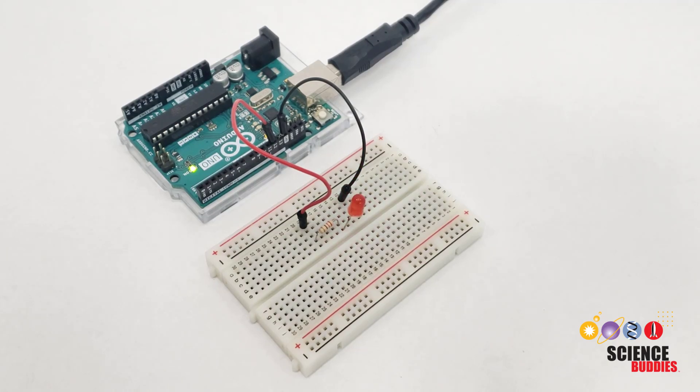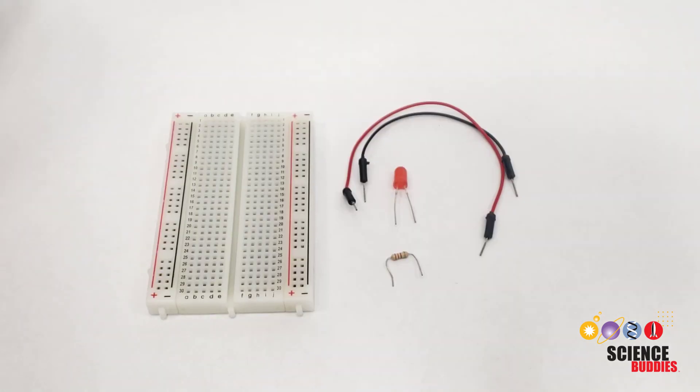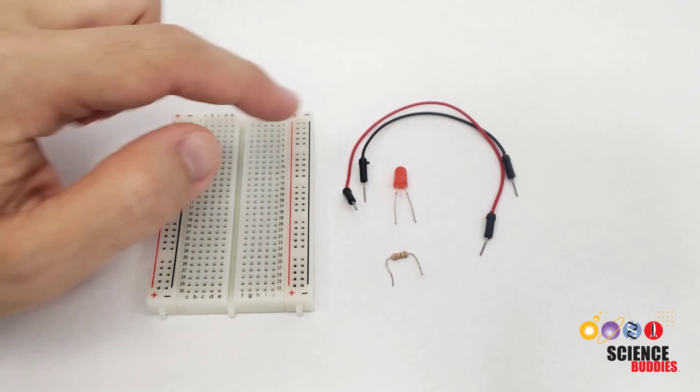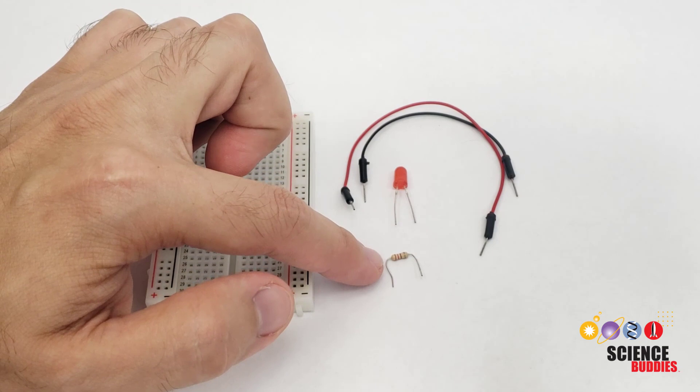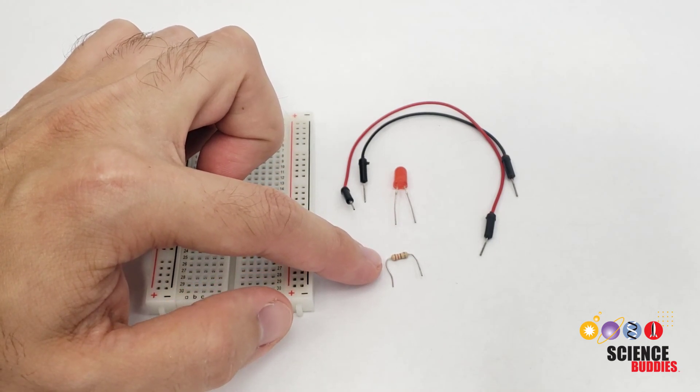In this video, you will learn how to write a new Arduino program and build a circuit to blink an external LED. In addition to your Arduino, you will need a breadboard, two jumper wires, an LED, and a resistor. 150 or 220 ohm resistors work well.